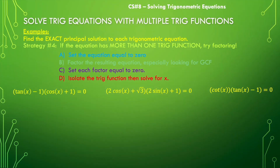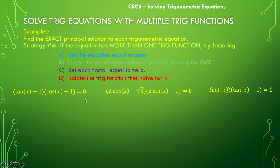For these first examples, the equations are already factored and set equal to zero, so we don't need to worry about those earlier steps. We're going to pick up at the point of setting each factor equal to zero. This lets us understand how to do these problems before moving on to more advanced ones where we have to do all the steps.